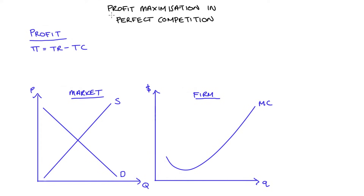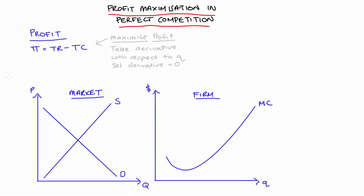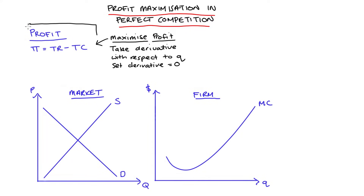Hi everyone. In this video, I'm going to discuss profit maximization in perfect competition. I'll start with thinking about our firm's profit function. Profit pi is equal to total revenue TR — all of the revenue that the firm gets from trading — minus the total cost of production TC. In order to maximize this profit function, I'm going to take the derivative with respect to quantity q and set that derivative equal to zero. This will tell us about the conditions the firm needs to fulfill if it wants to profit maximize.